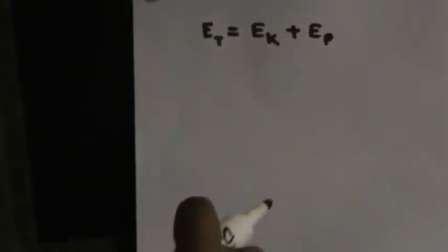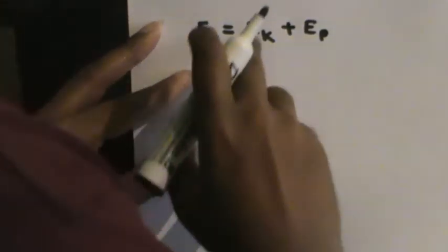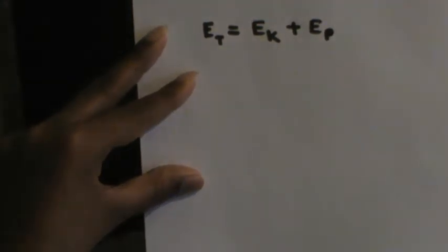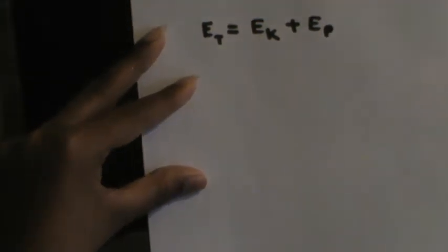The total energy of an orbiting satellite can be written as the sum of the kinetic energy and the gravitational potential energy. So if I take the total energy to be Et, then Et is equal to Ek plus Ep, where Ep is the gravitational potential energy. The total energy equals total kinetic energy plus total potential energy.